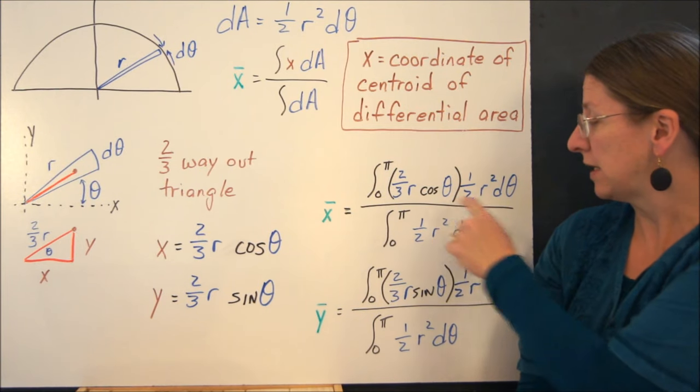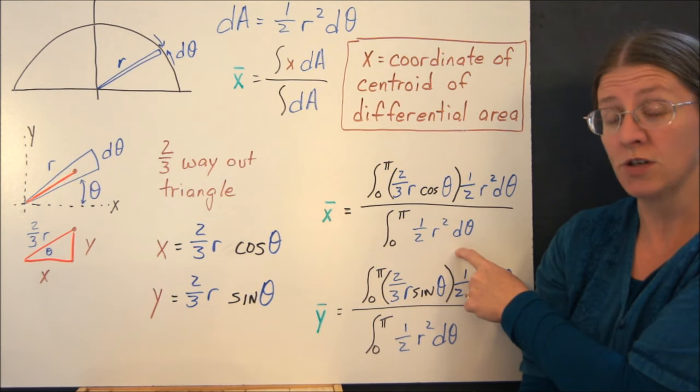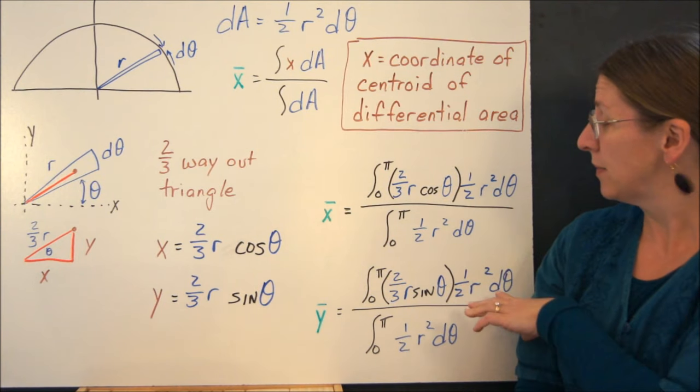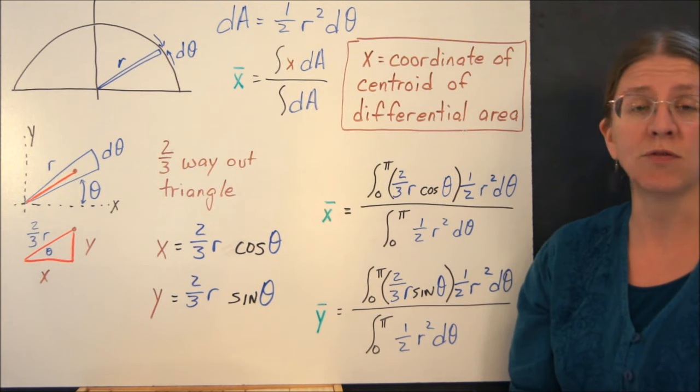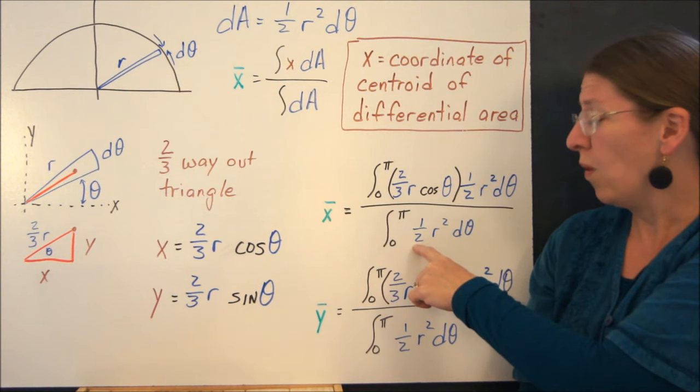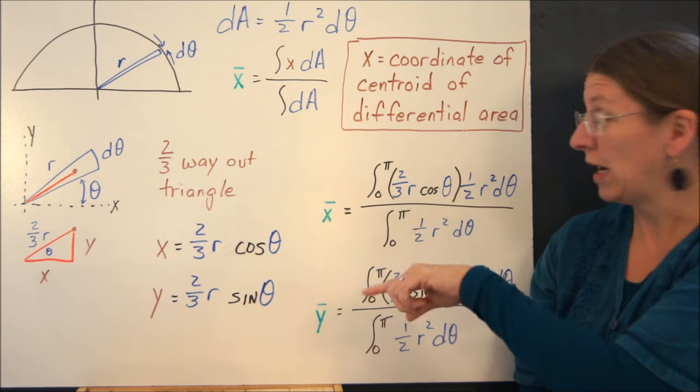These become the integrands here, and this is the differential area we just found. And you can integrate these straight out. The nice thing about this is that you're integrating d theta from 0 to pi, and one half r squared comes straight out.